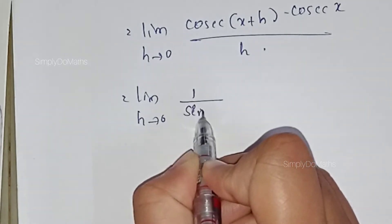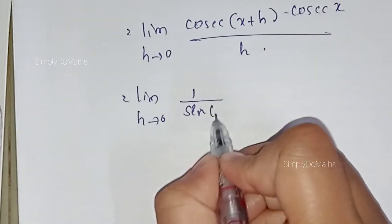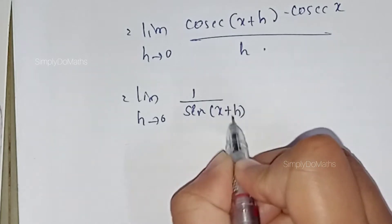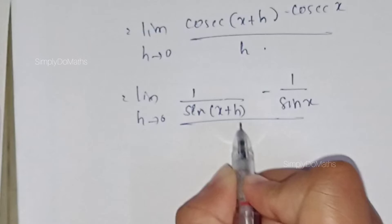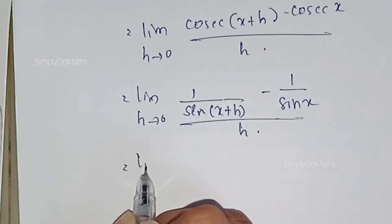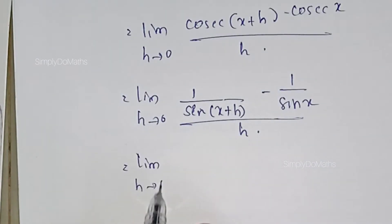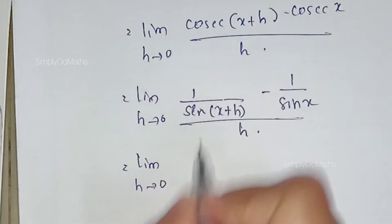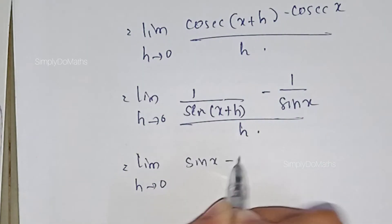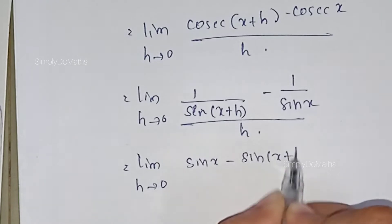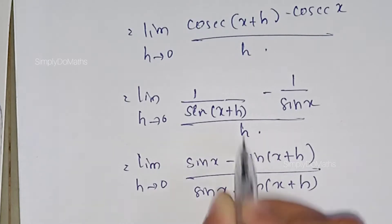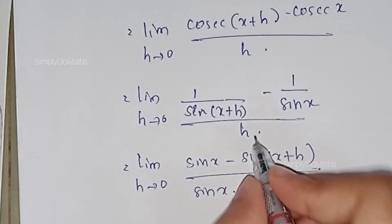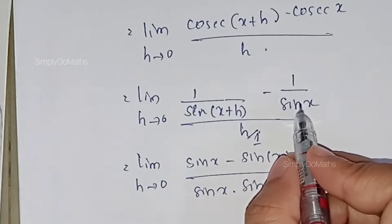Cosecant is nothing but the reciprocal of sine, so we write 1/sin(x+h) minus 1/sin(x), all divided by h. This becomes: limit as h tending to 0 of [sin x minus sin(x+h)] divided by [sin x · sin(x+h)], with h in the denominator, which can be written as multiplying by 1/h in the numerator.